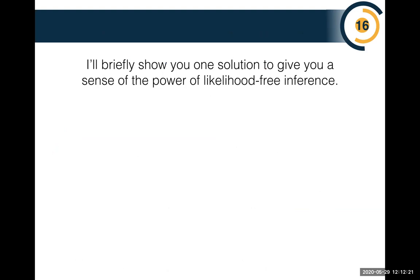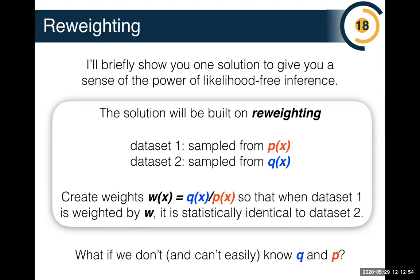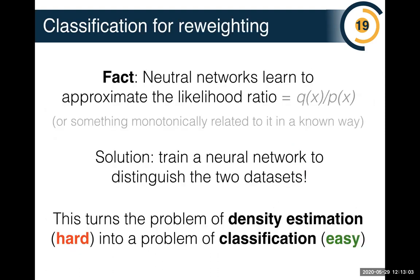One solution is based on reweighting. Imagine I have two datasets sampled from P(x) and Q(x). I'd like to create weights Q/P so that when I have a weighted dataset one, it's statistically identical to dataset two — any statistic computed on the weighted dataset one equals the same statistic on dataset two. Since we can't easily compute P and Q, deep learning comes to the rescue: neural networks learn to approximate the likelihood ratio Q/P. We train a neural network simply to distinguish the two datasets, then manipulate the output to learn the likelihood ratio without ever knowing P or Q separately. This turns the hard problem of density estimation into the easier problem of classification.